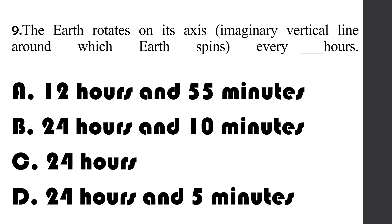Number 9: The earth rotates on its axis — an imaginary vertical line around which earth spins — every blank hours. A. 12 hours and 55 minutes, B. 24 hours and 10 minutes, C. 24 hours, D. 24 hours and 5 minutes.